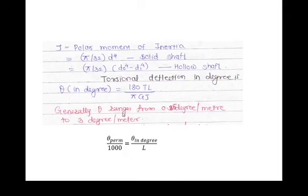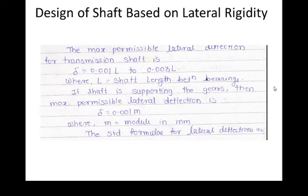The angle of twist in degrees is: θ (degrees) = (180/π) × (T × L) / (G × J). Generally, the permissible angle of twist is between 0.25° to 3° per meter, meaning θ_permissible / 1000 = θ (degrees) / L.